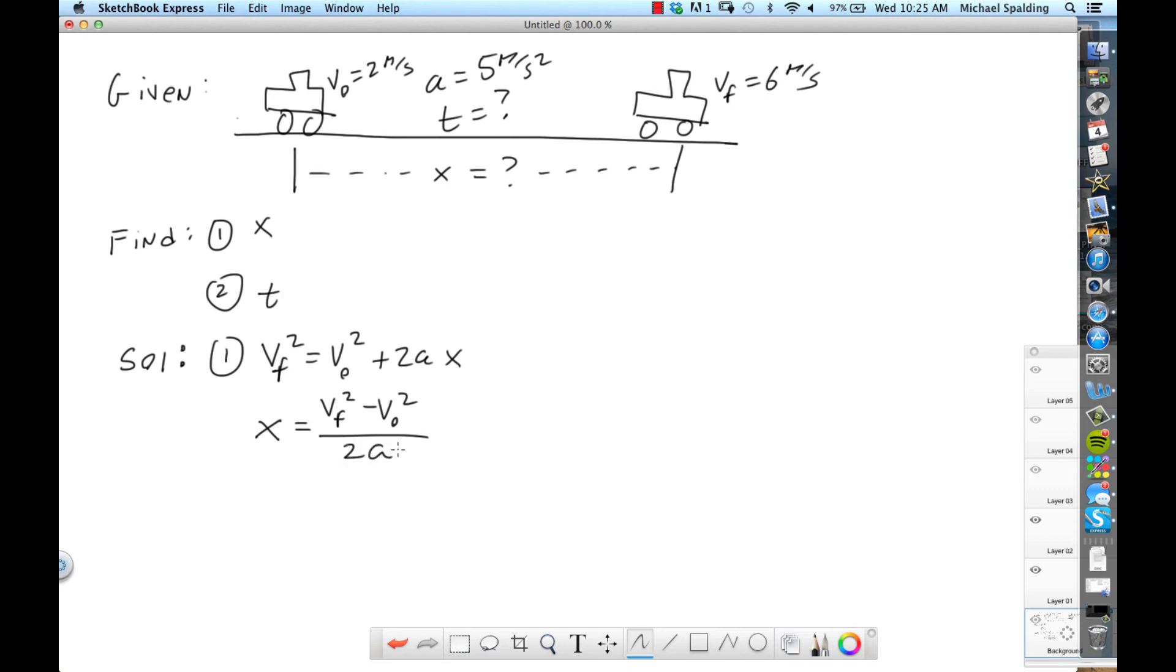Do the algebra, then plug numbers in. So V final is 6, V initial is 2, and then the acceleration was 5. All right. So this is how you want to show your work when you're doing homework. So what's that? We'll just finish this off. That's 36 minus 4, so 32, 3.2. Okay.